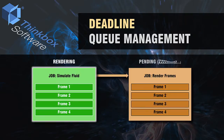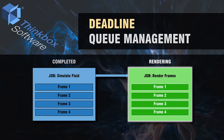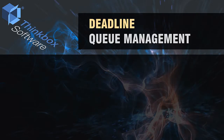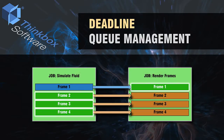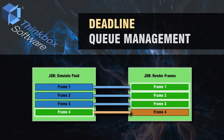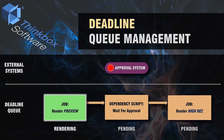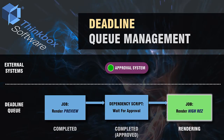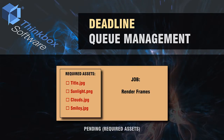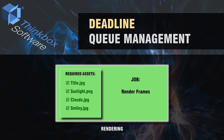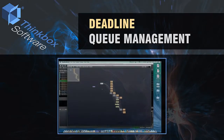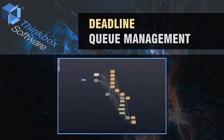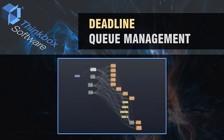Deadline's dependency system allows a job to start only when specified requirements are met. A job can be made dependent on other jobs, and tasks within a job can even be made dependent on the tasks of other jobs. A job can also be made dependent on scripts that reference external systems, such as a review and approval system, or dependent on the presence of asset files by populating the job's required asset list property and enabling the asset dependency option. Through Monitor, dependencies between jobs can be viewed as a node graph, and can be directly added, changed, or removed.